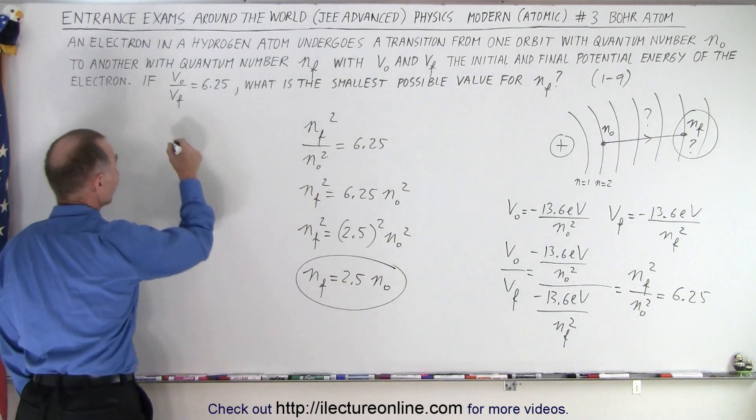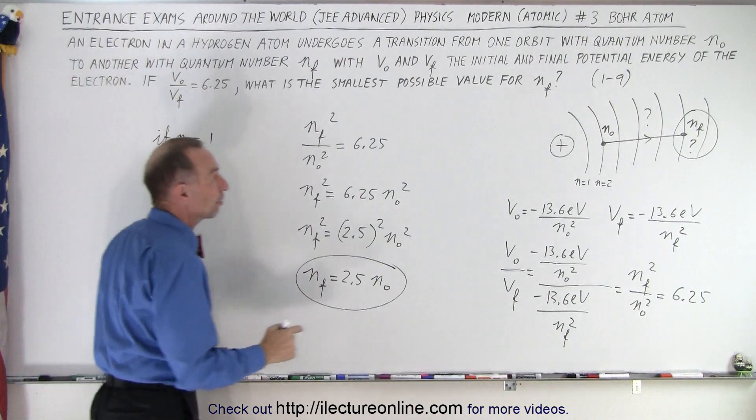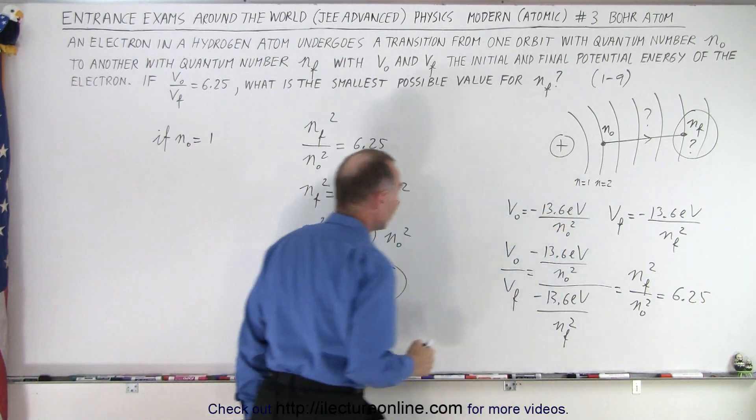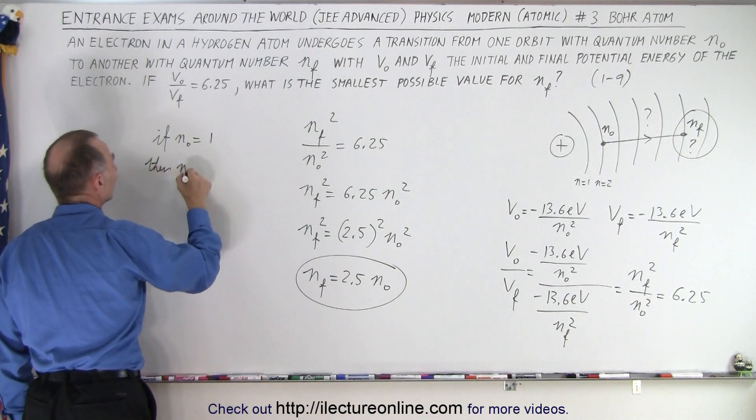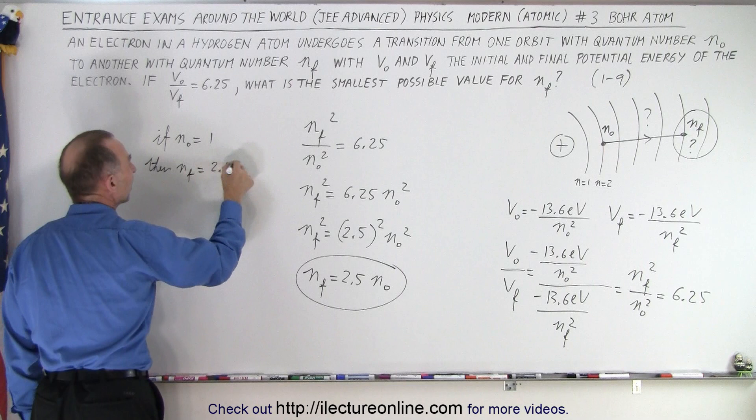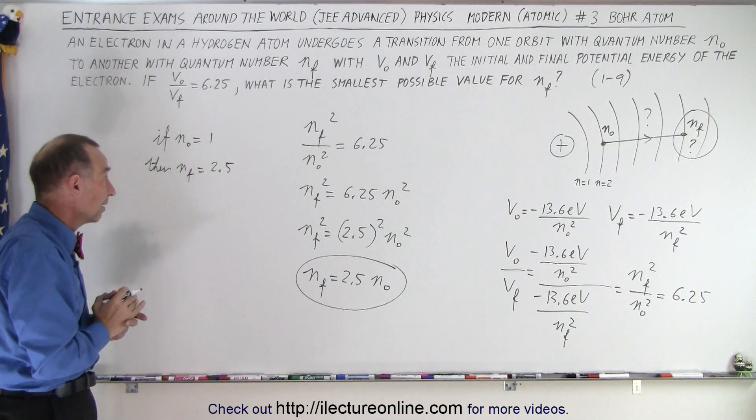Now notice, if n_initial equals 1, if it came from the very first energy level, then n_final would be 2.5. Now that's impossible. n_final has to be an integer. It cannot be 2.5.